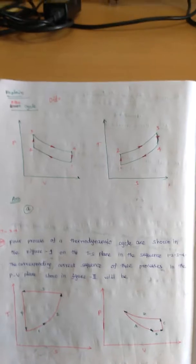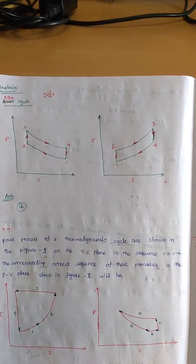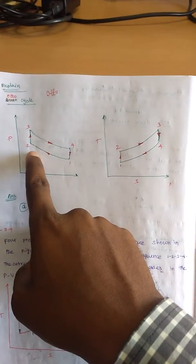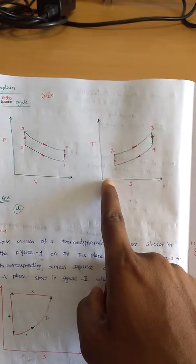let us see the Otto cycle. Here, the curve 1-2-2. Here it is curve in PV diagram. Then here it is straight line.